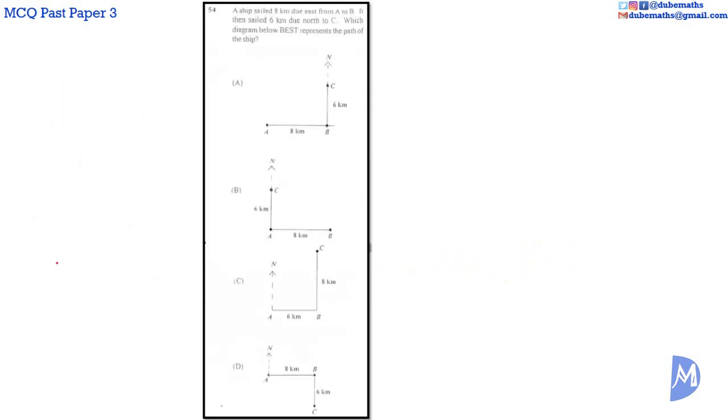Question 54. A ship sailed 8 kilometers due east from A to B. So the ship is at B. It then sails 6 kilometers due north to C. Which diagram below best represents the path of the ship? The answer is A.